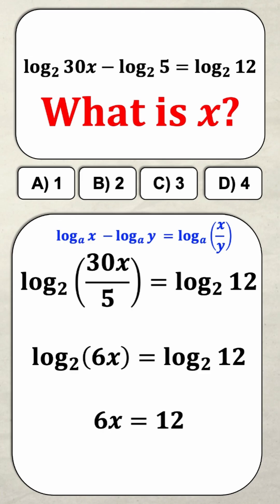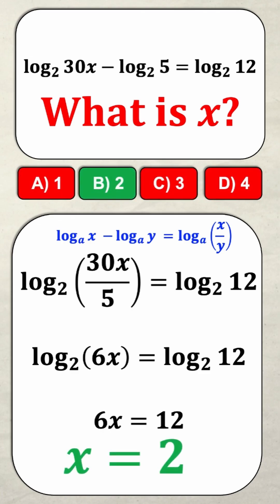And now it's very simple. Dividing both sides by 6 gives me x is equal to 2. Did you get this one right? Let me know in the comments.